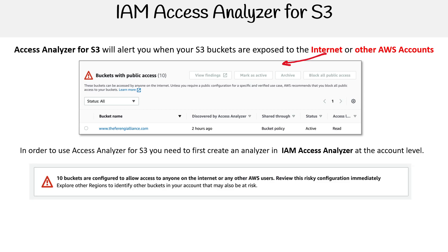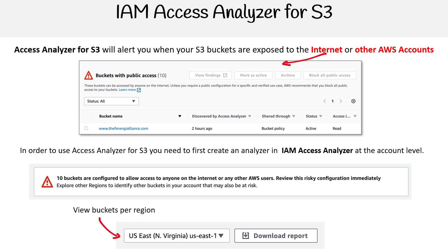Just notice here, it says 10 buckets are configured to allow access to anyone on the internet. So that's the warning you would get saying, hey, you have 10 buckets — you might want to go and investigate. You can view the buckets per region and download the reports to get more information. Very straightforward and simple service, but super good to quickly find out where you might have vulnerabilities.